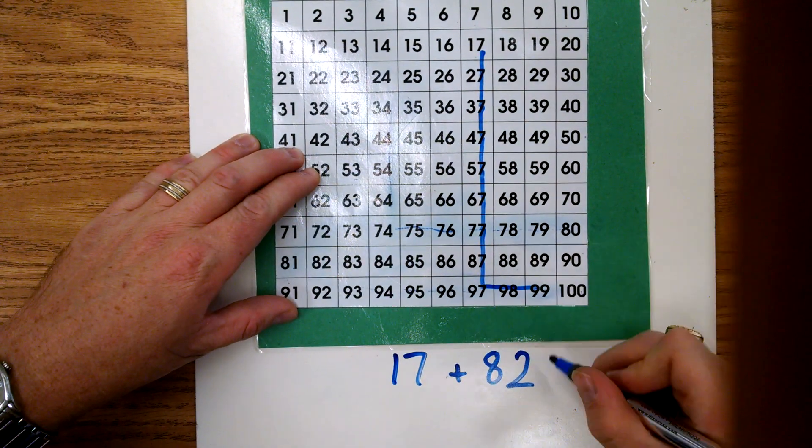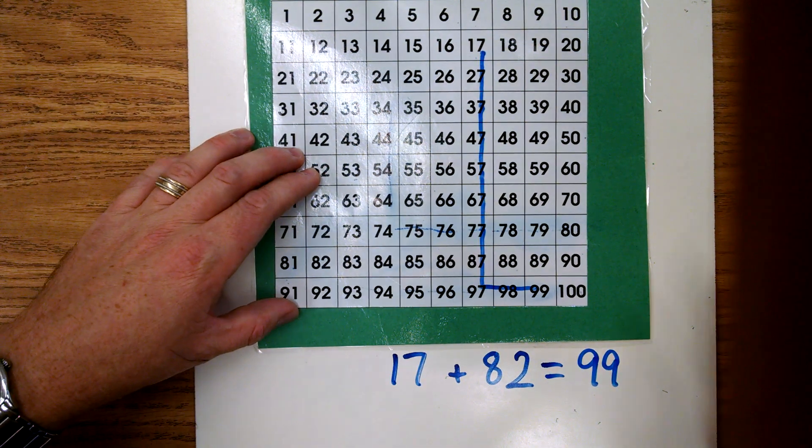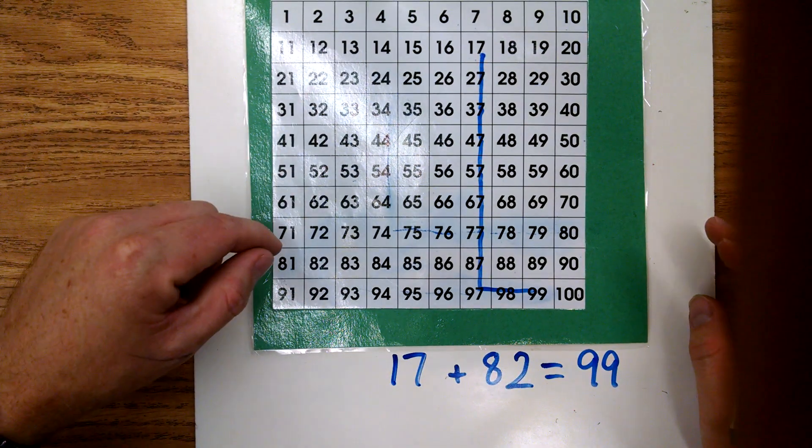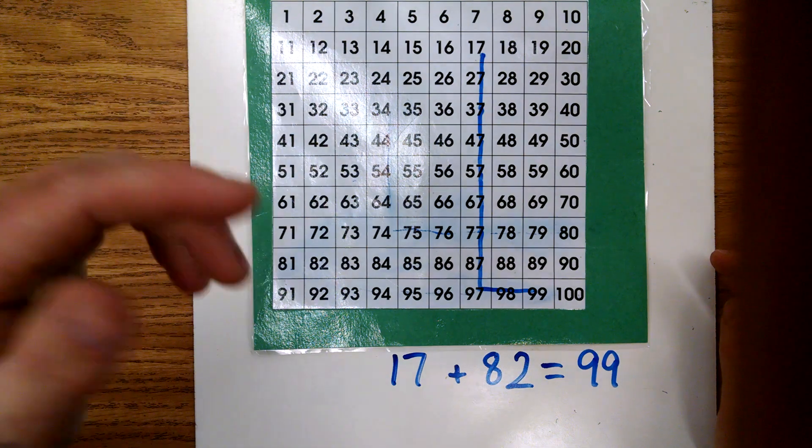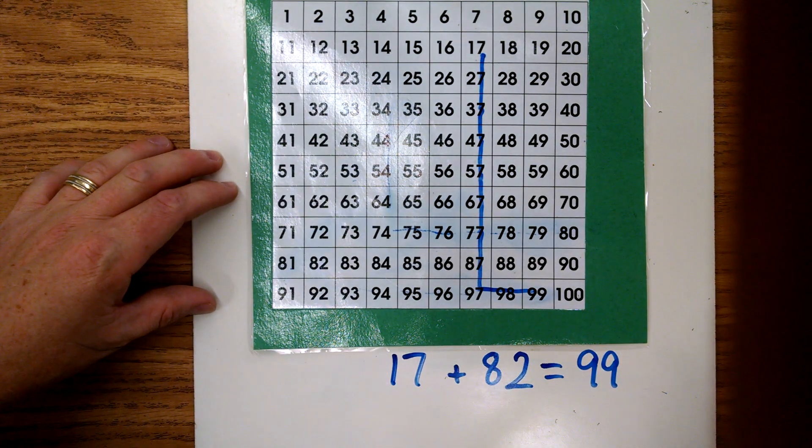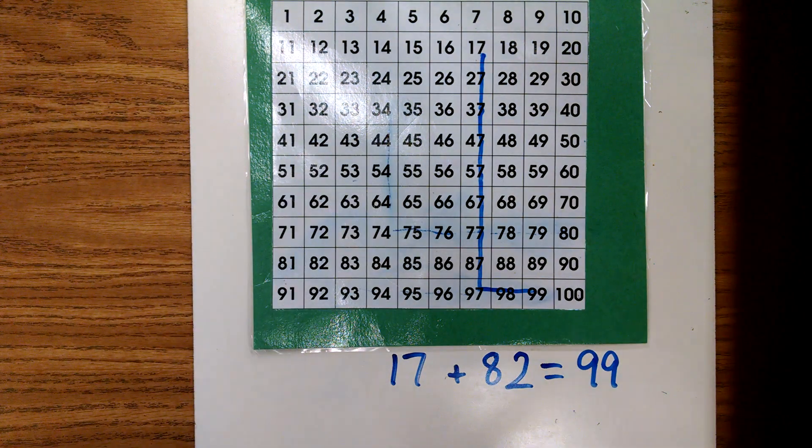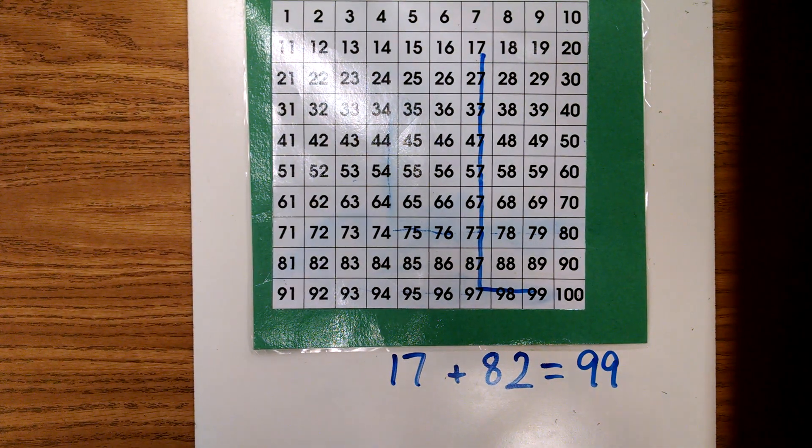Okay, we'll do another video just like this for subtraction. All we do for that is the opposite. We'll go up our tens and back our ones. But for this one we're adding two-digit addition with a hundreds chart. Okay, give it a try at your house. Have fun!